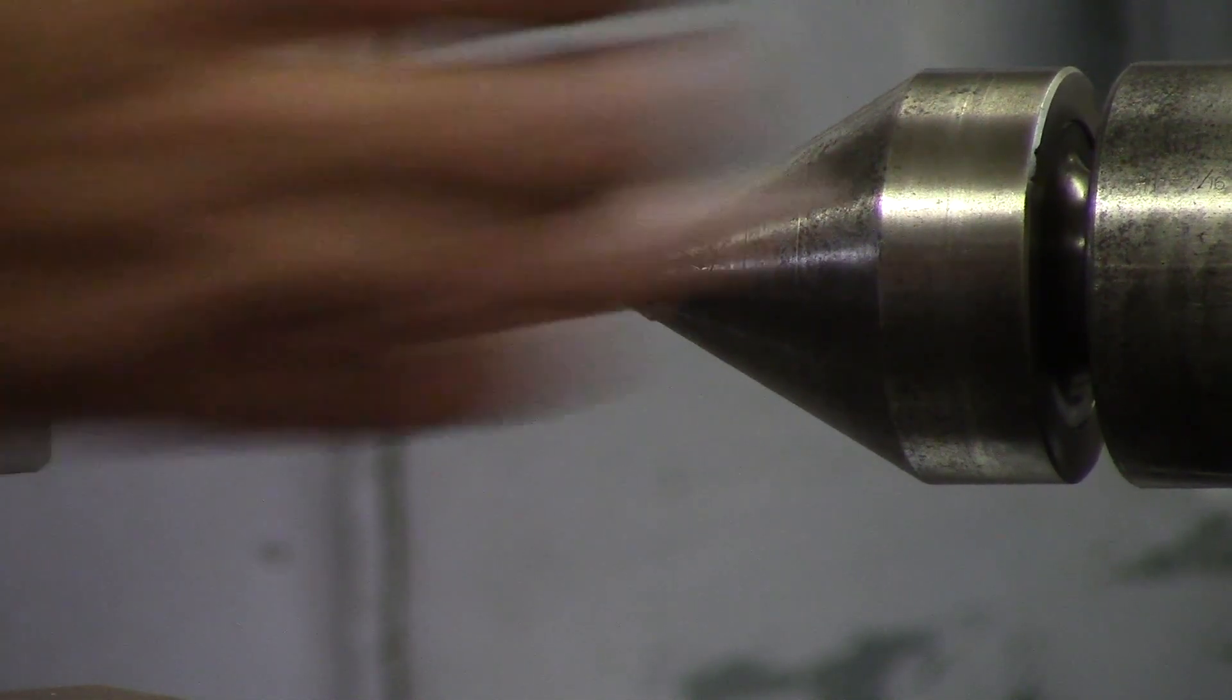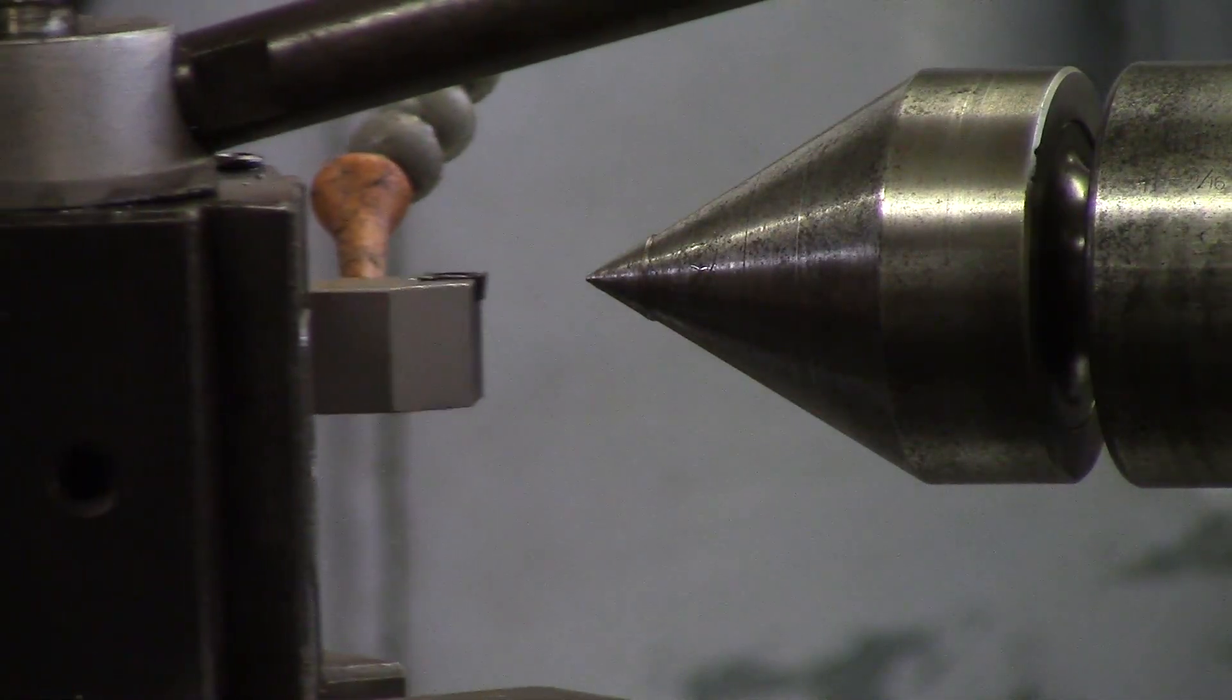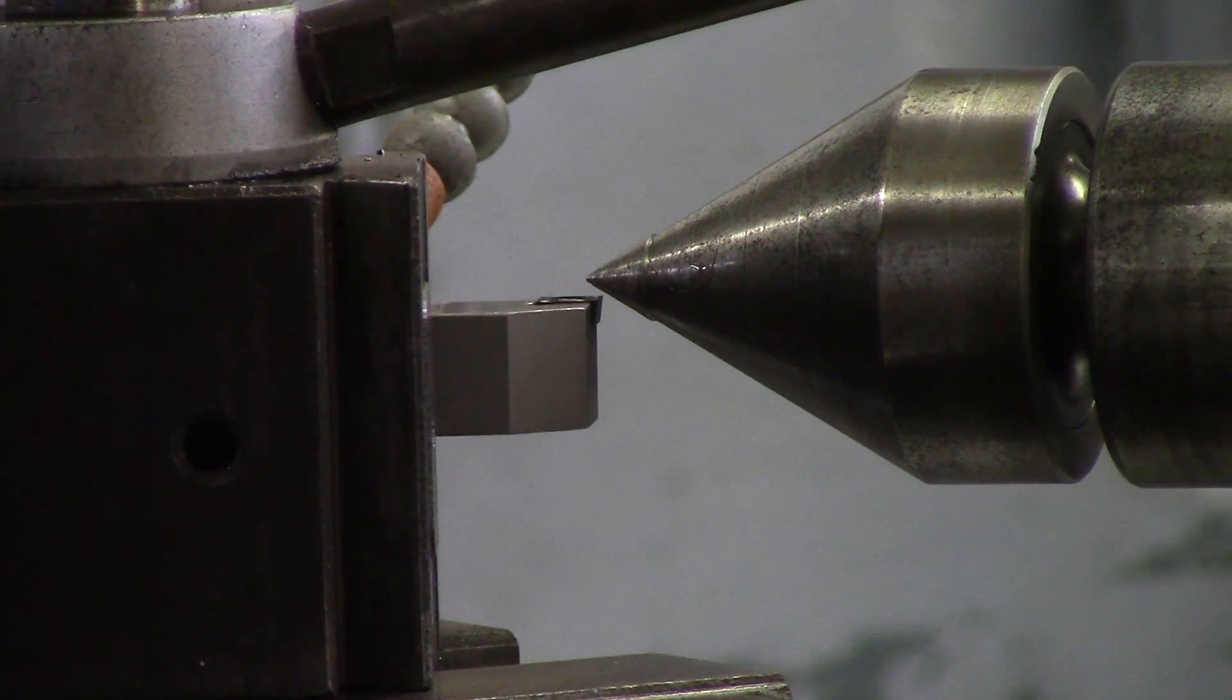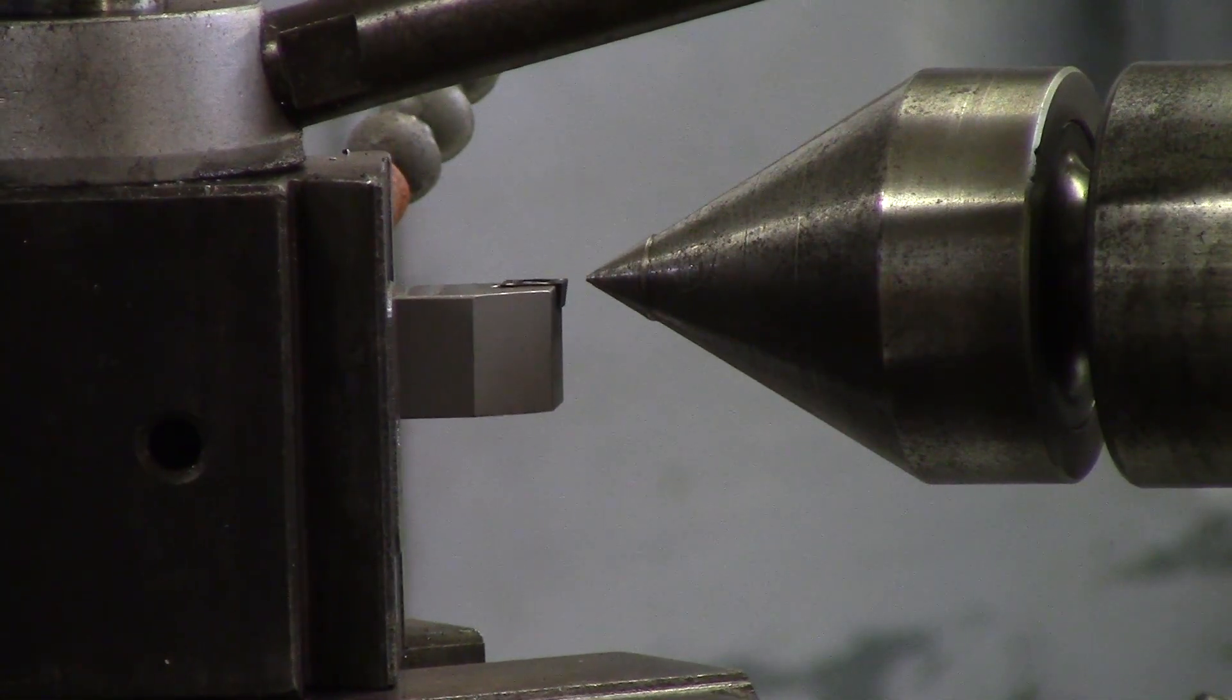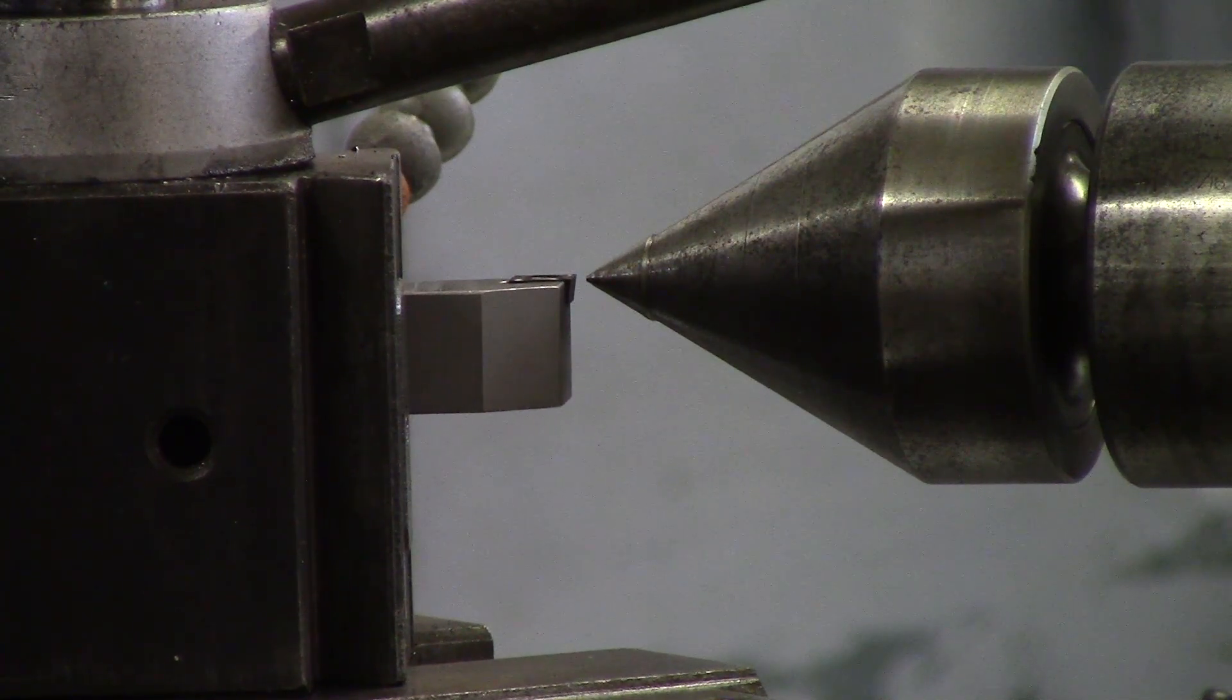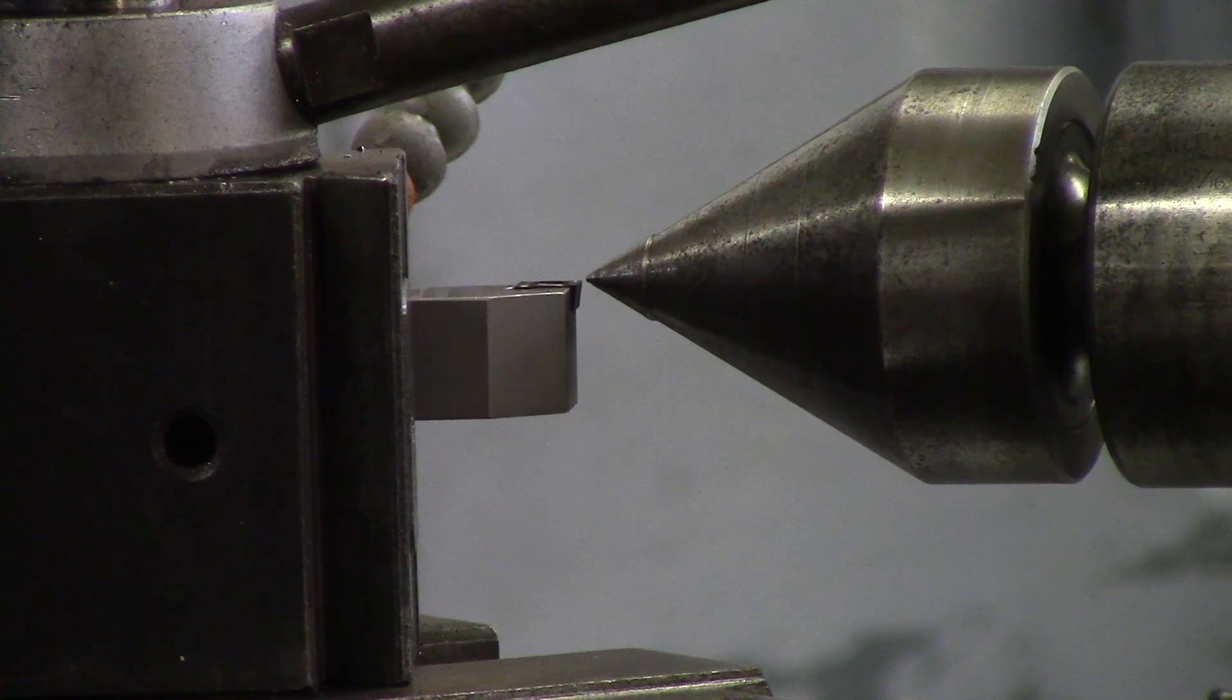So I have my tool post loose so I can slide my tool up and down and I am going to position my tool to where the tip of the tool is almost touching the very edge of the center. And then all I do is eyeball the center of the center to the tip of the tool. It is very simple.